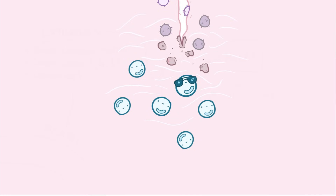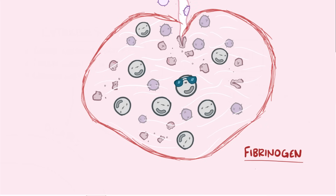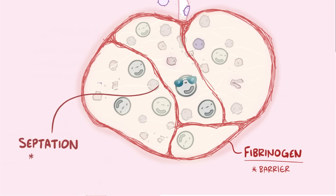As those immune cells get to a point where they can't withstand the environment, they die too and become part of that pool. Initially the debris might be intermixed with healthy tissue, but over time it can coalesce into a single area, a process that's often sped up when more immune cells get involved. Around this pool of pus, a wall of fibrinogen — the same protein that holds together blood clots — starts to harden into a barrier. Occasionally, sheets of fibrin form septations, creating loculations or pockets of pus within the abscess itself, kind of like an abscess within an abscess.